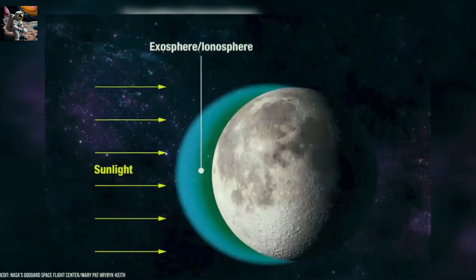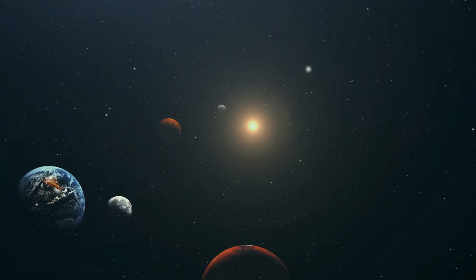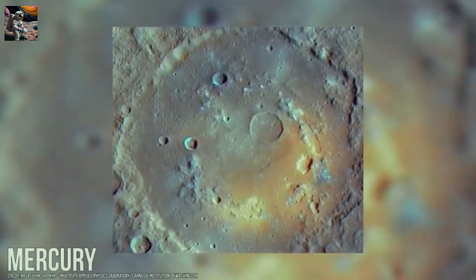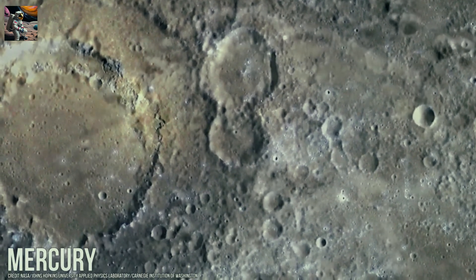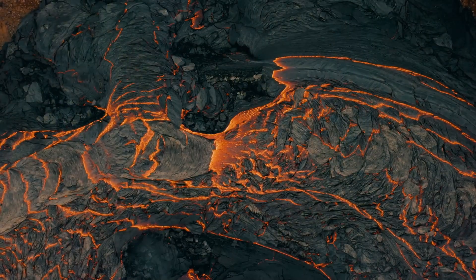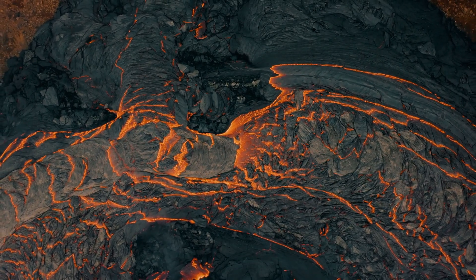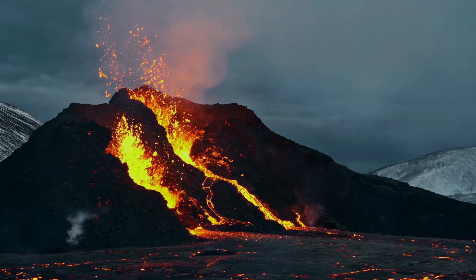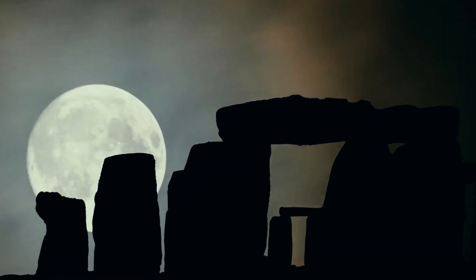During the formation of the solar system, there was considerable volcanic activity due to the hot and volatile environment. Evidence of this activity is apparent on the surfaces of the moon and Mercury, where what appear to be craters are actually dormant volcanoes. Unlike the mountainous volcanoes on Earth, volcanic formations on Mercury likely originated from lava flowing through fissures in the crust, spreading across the surface. On the moon, we find steep domes indicating similar volcanic activity.